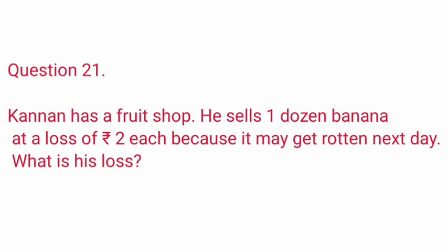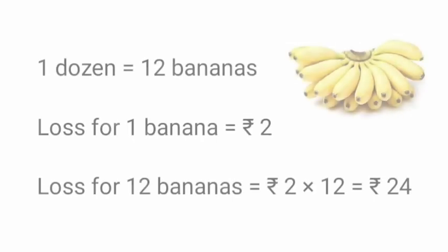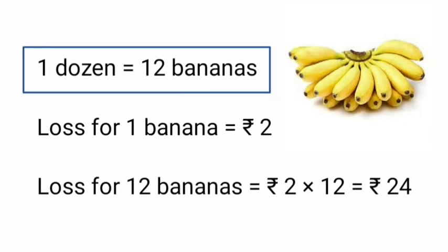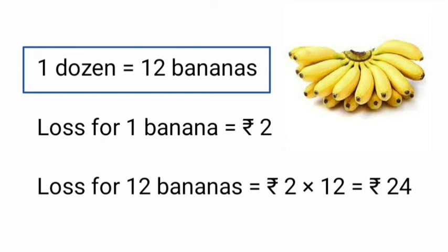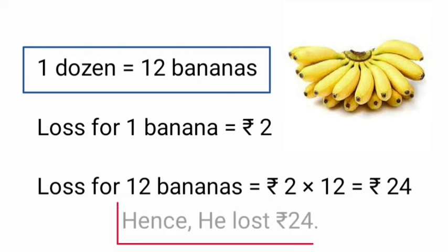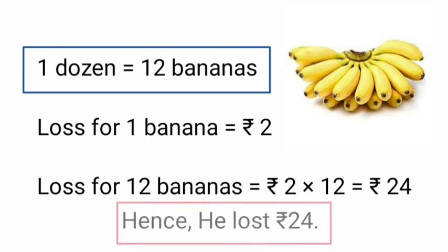Question 21: Kannan has a fruit shop. He sells 1 dozen bananas at a loss of Rs. 2 each because they may get rotten the next day. What is his loss? One dozen bananas equals 12 bananas. He sells each banana at a loss of Rs. 2, so for 12 bananas: 2 rupees times 12 equals Rs. 24. Hence, he lost Rs. 24 by selling 1 dozen bananas.